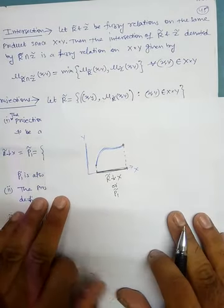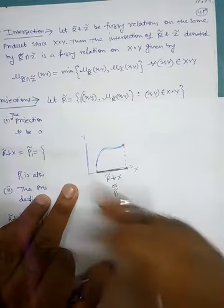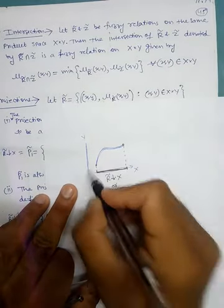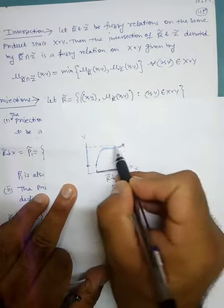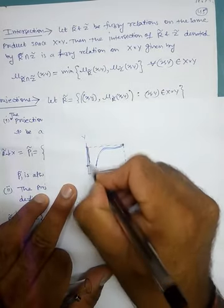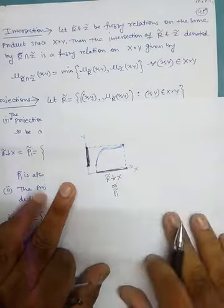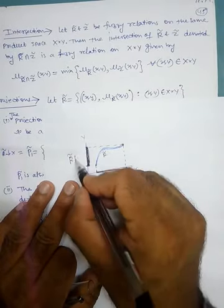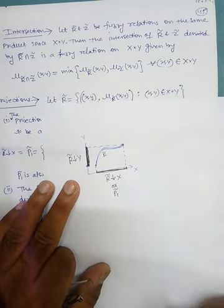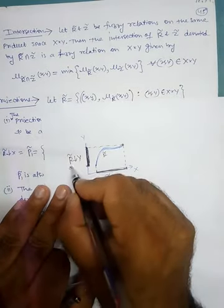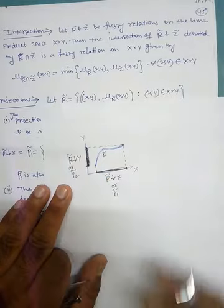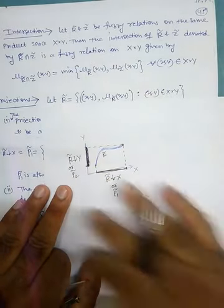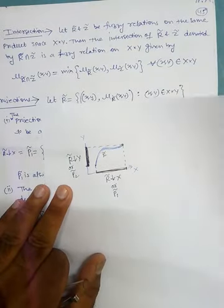Similarly, suppose we want to find out the projection in the Y direction, then R on Y, or P2 — this is called the projection on Y. This is just a graphical depiction so that you can understand.